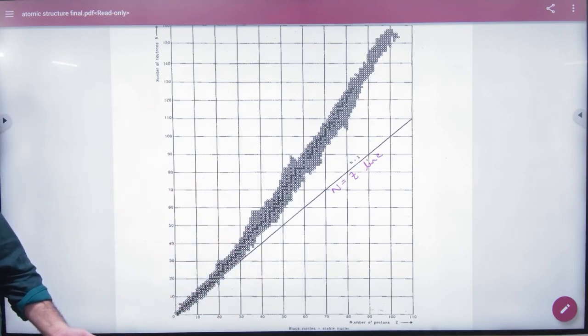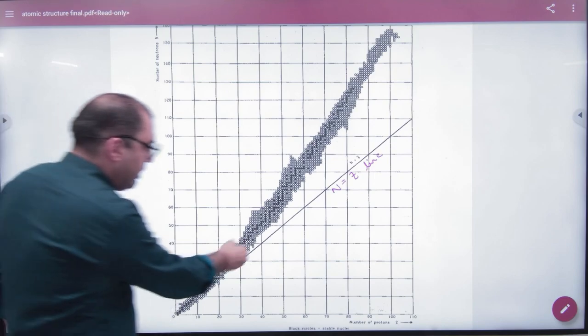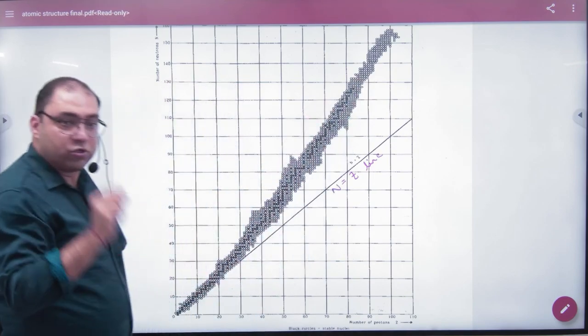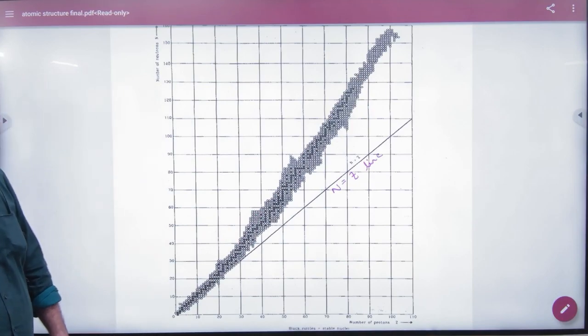In stable elements, N and Z have been plotted on the graph. The plotting is done by dark-colored circles. The white-colored circles are a little unstable. If you take a new element...